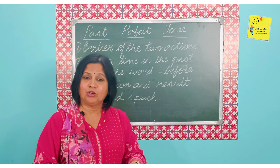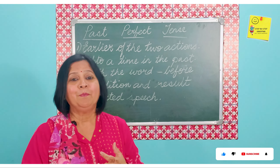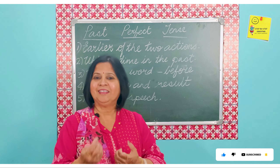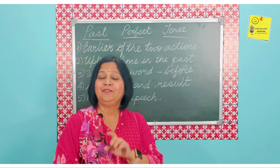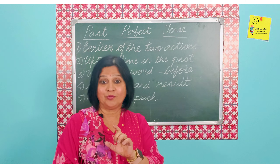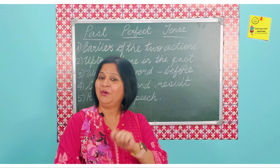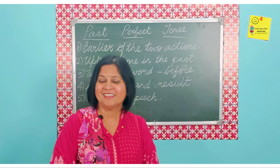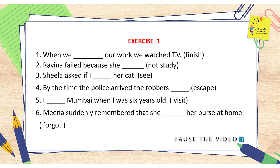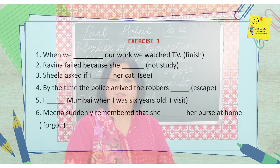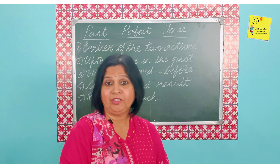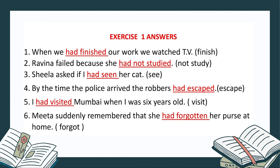You just need to remember the structure: subject plus 'had' plus the past participle. Let's apply this knowledge to exercise number one, where you have to fill in the blanks with the past perfect tense of the verb given in the bracket. In every sentence you can see there is also another action or event which took place. 'When we had finished our work, we watched TV' — two events: work finishing and watching TV.